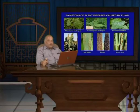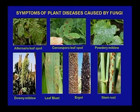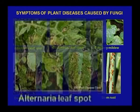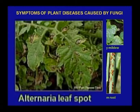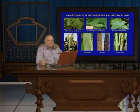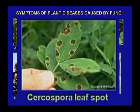Now I am showing you the symptoms of certain diseases by which we can see what type of pathogen or causal organism is causing disease. First, we see the Alternaria leaf spot of tomato plants. The leaves are totally infected with pustules or leaf spots of Alternaria, which is causing the disease. It is a fungal disease.